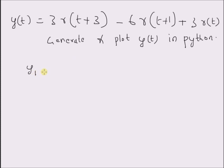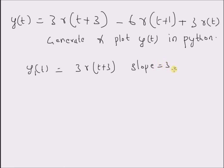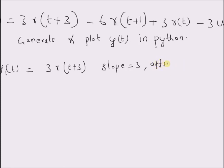y1(t) is equal to three times r(t + 3). That means the slope is equal to three and the offset is equal to three, which means the signal starts at minus three.